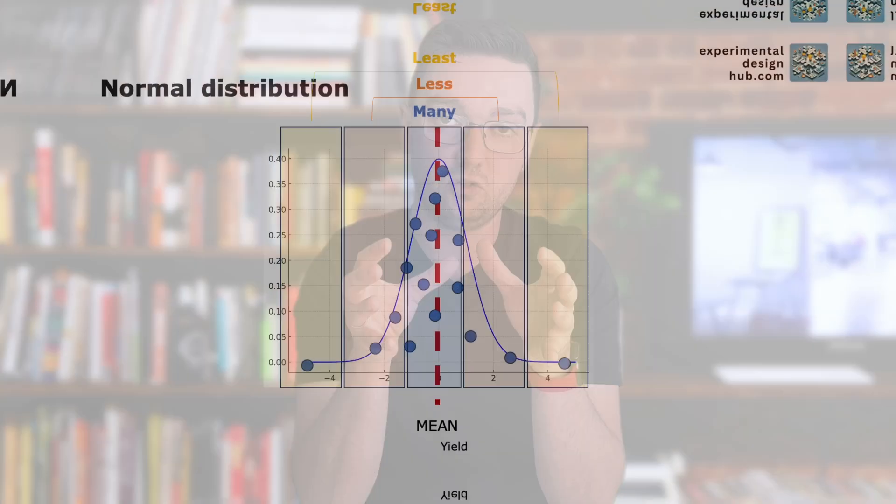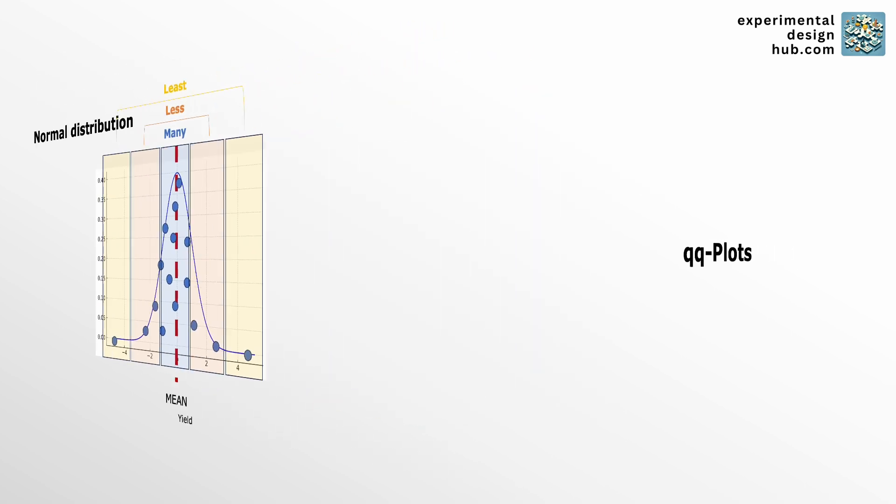The problem now is that it's pretty difficult to see just from the shape of the curve whether or not your data is normally distributed. And that's where the QQ plot comes in.